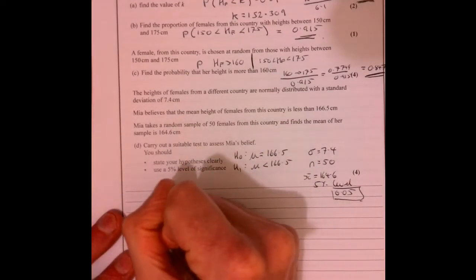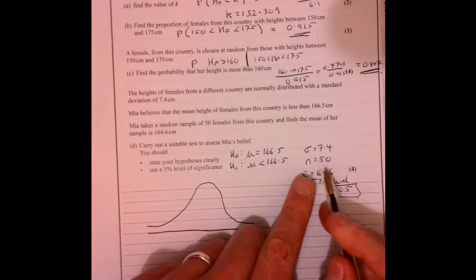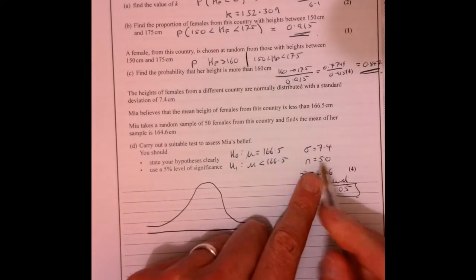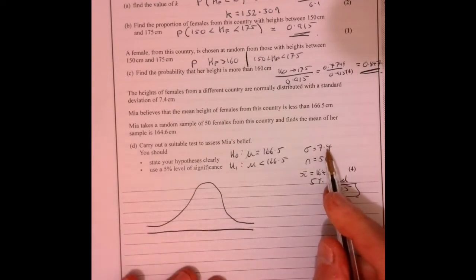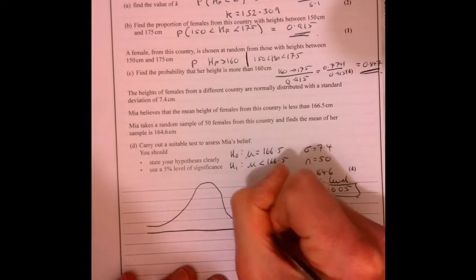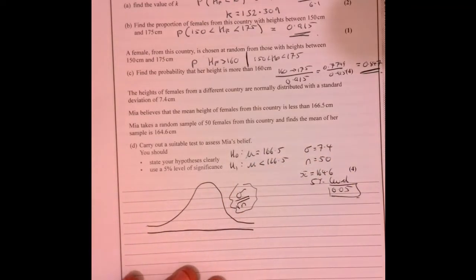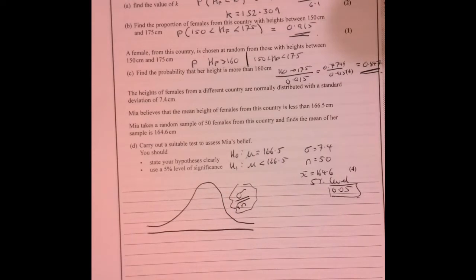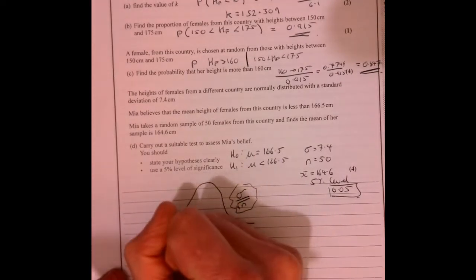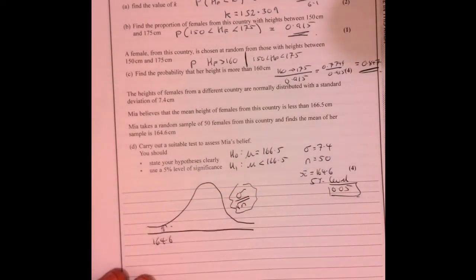Let's have a little think about what's going on. The easiest way of doing this question is drawing myself a little diagram. Now, because it's a sample, when we talk about the standard deviation here, it's of the means. It's a sample of means. So we're interested in where that 164 lies.